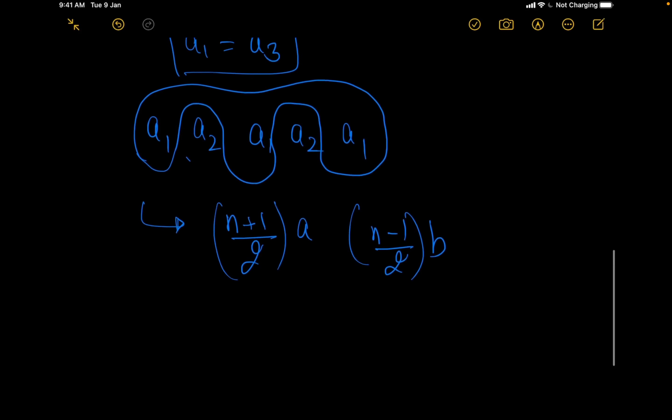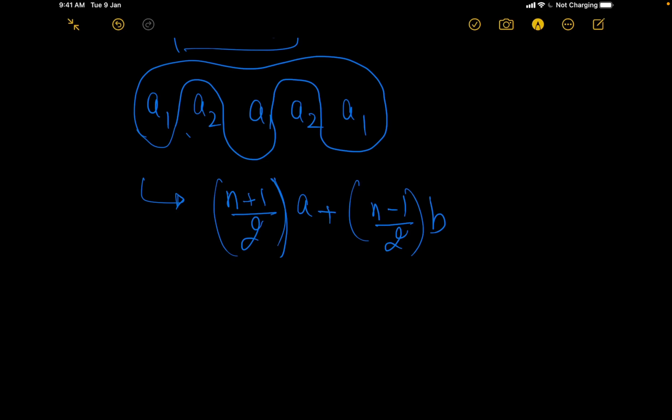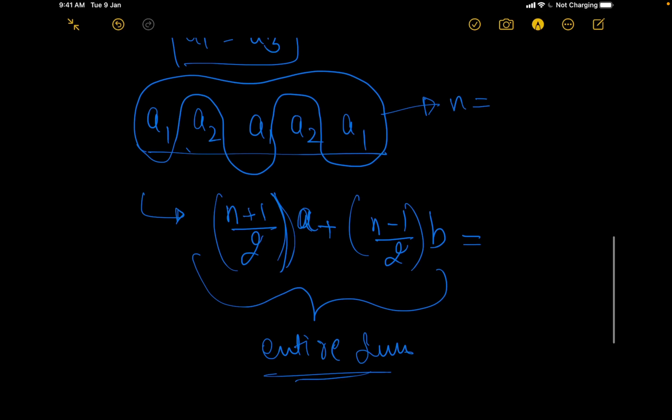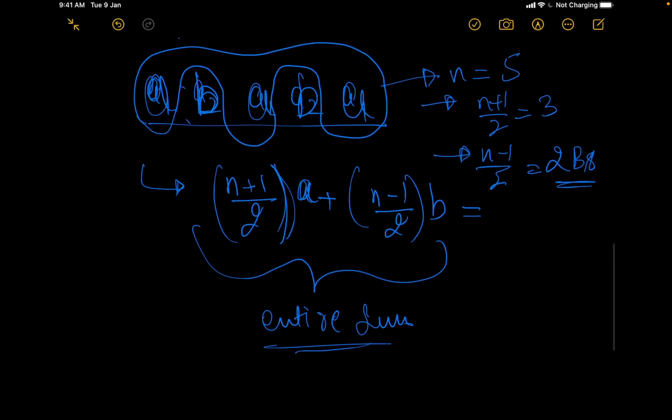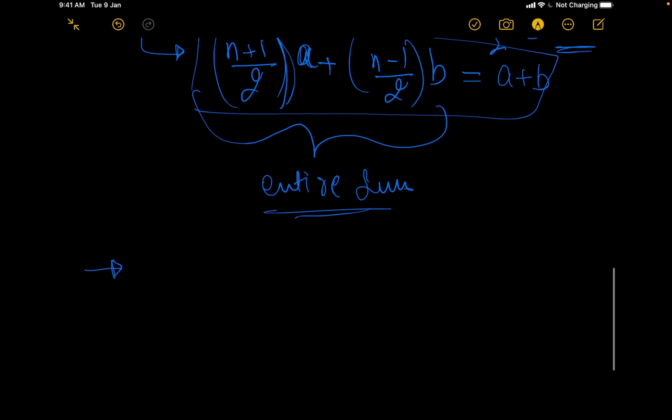Now, what we want to do is that (n+1)/2 times a plus (n-1)/2 times b should give me the entire sum. Because in total I have (n+1)/2 a's. For example, if n equals 5, I have (n+1)/2 that is 3 a's and I have (n-1)/2 that is 2 b's. Their sum should be equal to the sum of a pair, and a pair would be a plus b. Any pair would be a plus b. So we will write it as it is.